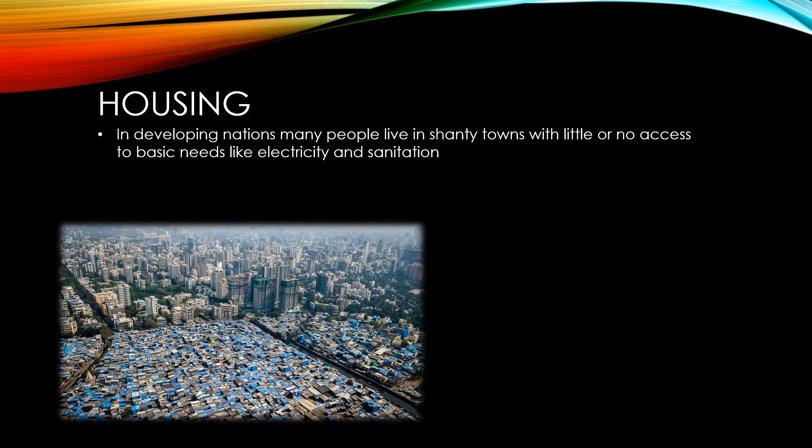In developing nations, many people are forced to live in shanty towns. These are very shoddy villages on the outskirts of cities with little or no access to basic needs like electricity and sanitation. This image of Mumbai, taken by drone photographer Johnny Miller, is part of a series that highlights the vast differences in the way people live between rich and poor.